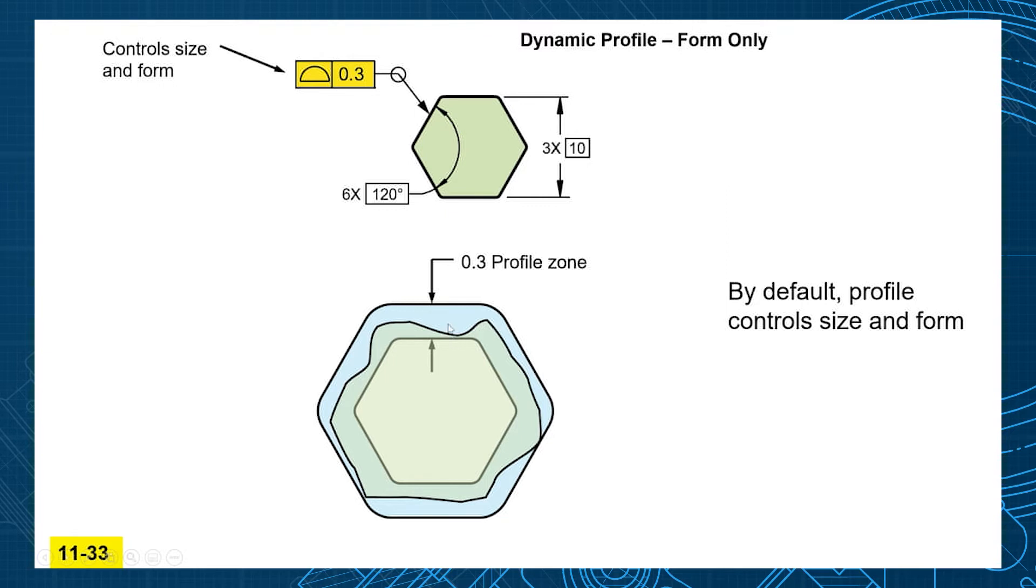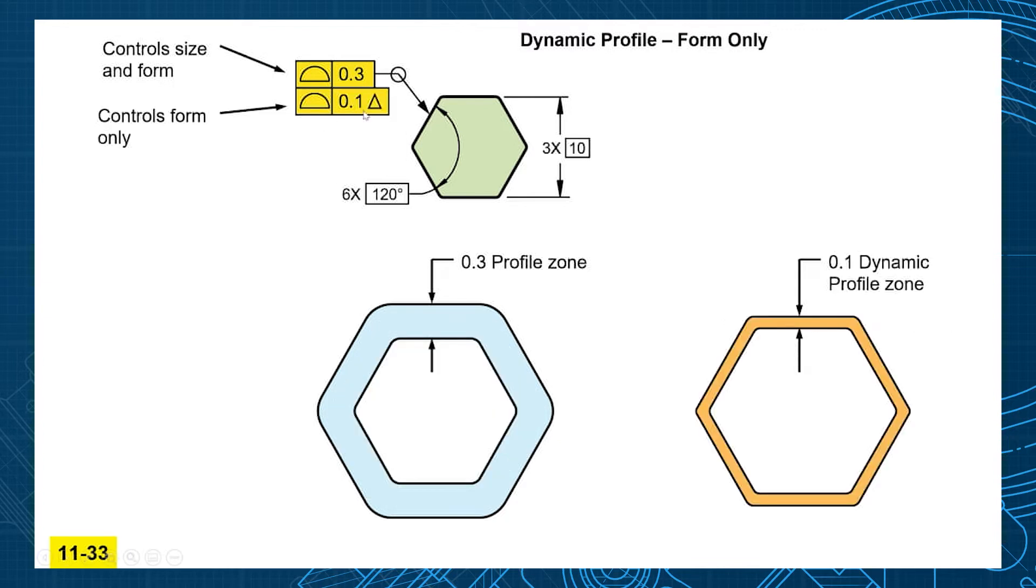So what we want is to control the form of it but I don't really care about the size. You can make a big hex, you can make a small hex, but I want it to look like a hex. So they created a new modifier called dynamic profile.